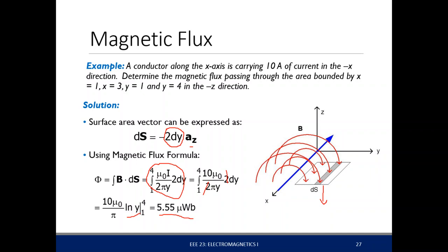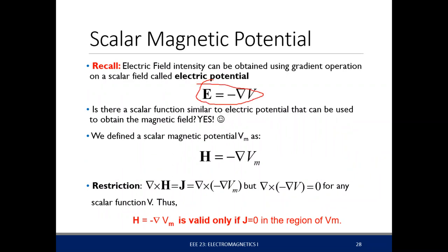If the electric field has an electric potential or voltage V, we can also define a magnetic potential for H. Looking at the point form: we know the electric field E equals the negative gradient of the electric potential. There is also a scalar function that measures the magnetic potential, defined similarly — we call it Vm, the scalar magnetic potential. Therefore H equals the negative gradient of Vm.